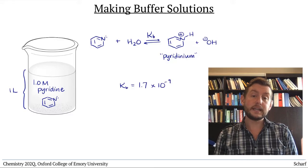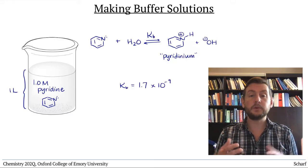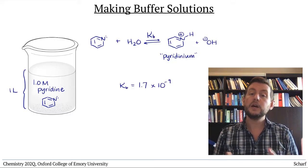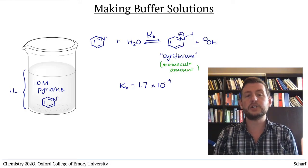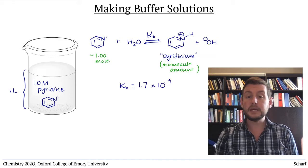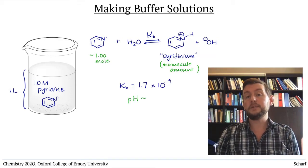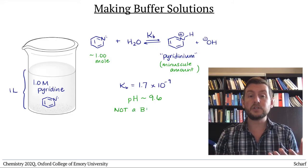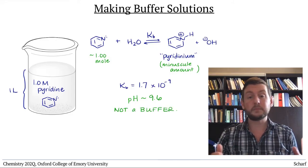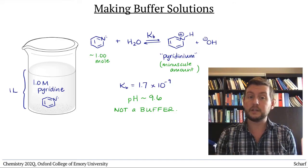If we constructed an ice table and determined the equilibrium concentrations of all these compounds, we'd find that there was a minuscule amount of the conjugate acid around, and that the pH of the solution was about 9.6. This is not a buffer solution, since the conjugate acid and base are not present in roughly equivalent amounts.